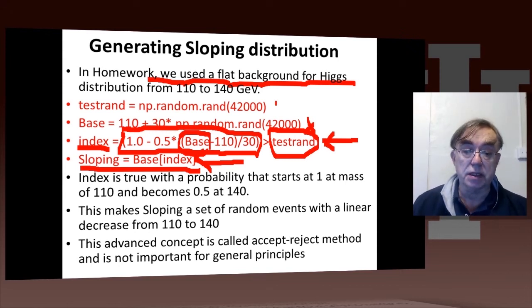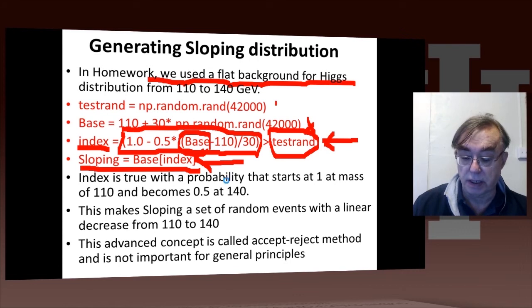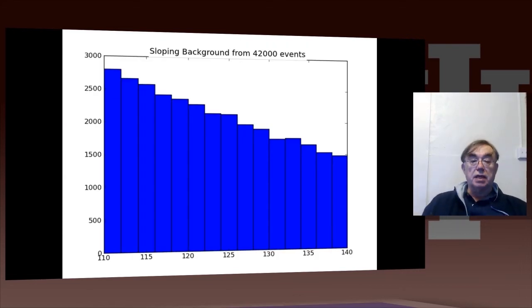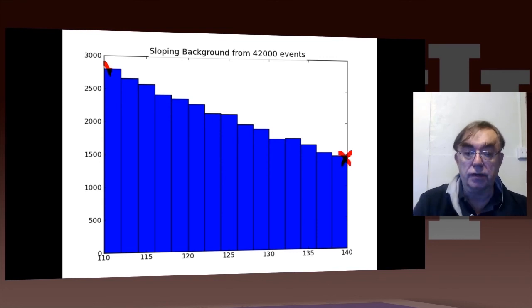So we will now get a sloping distribution if we now plot sloping, as shown here. So that corresponds to plotting that sloping variable. And you can see it, as we said, it starts here and it goes down to roughly half its value at 140. So that's how sloping was gotten.